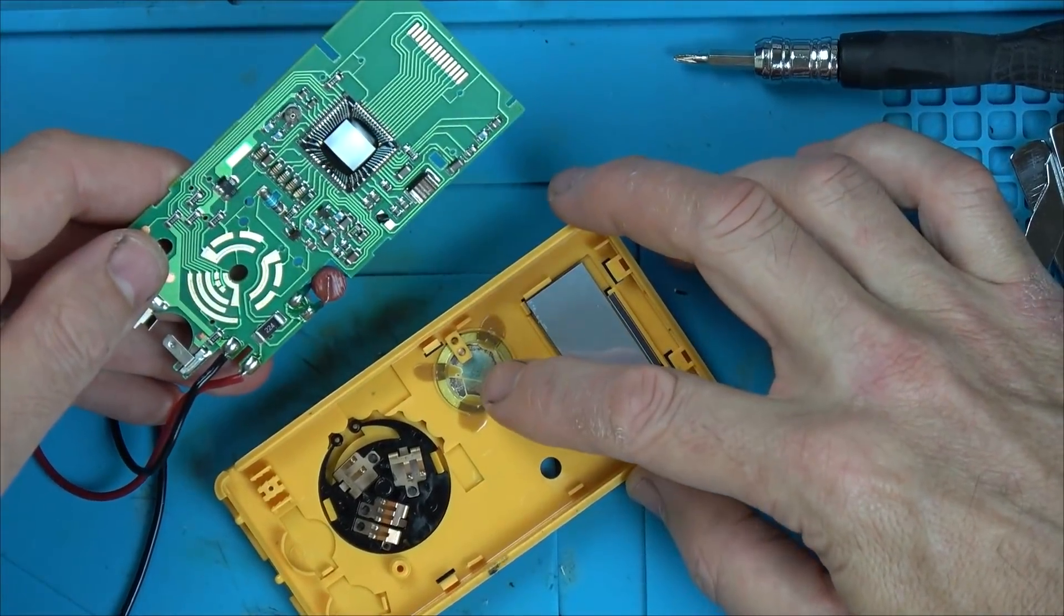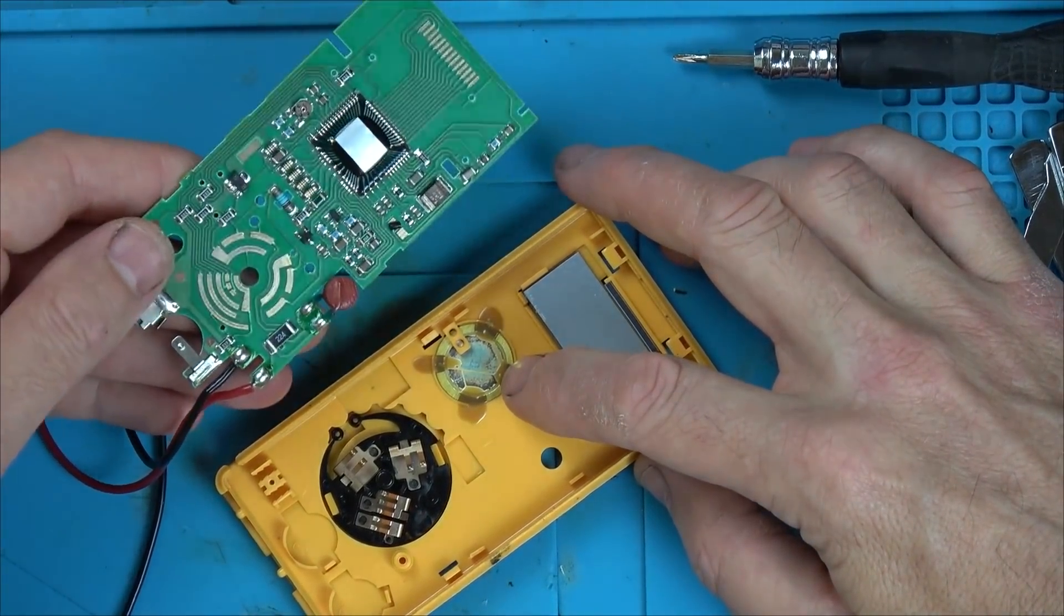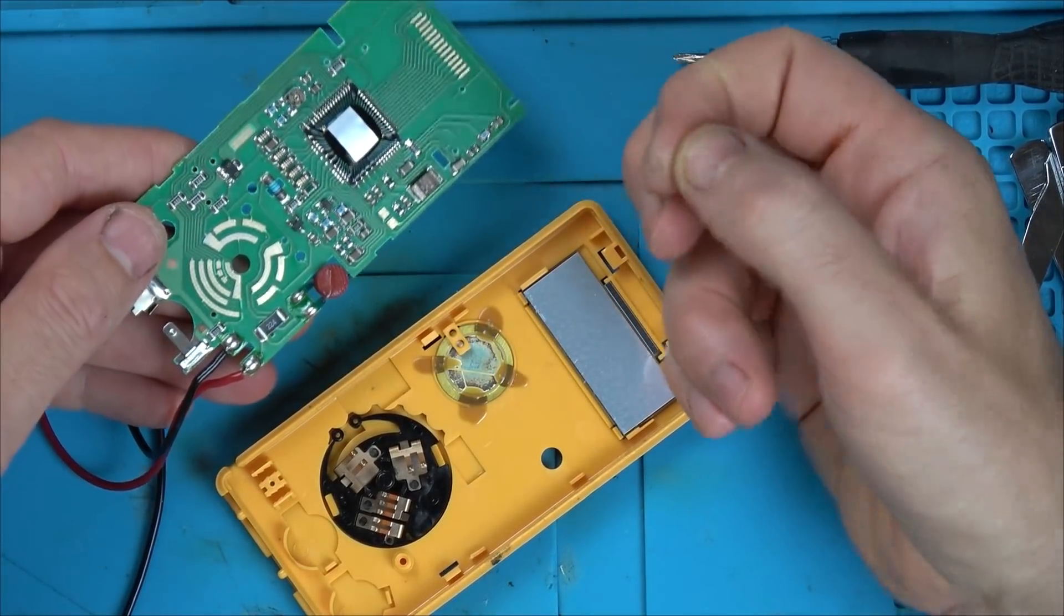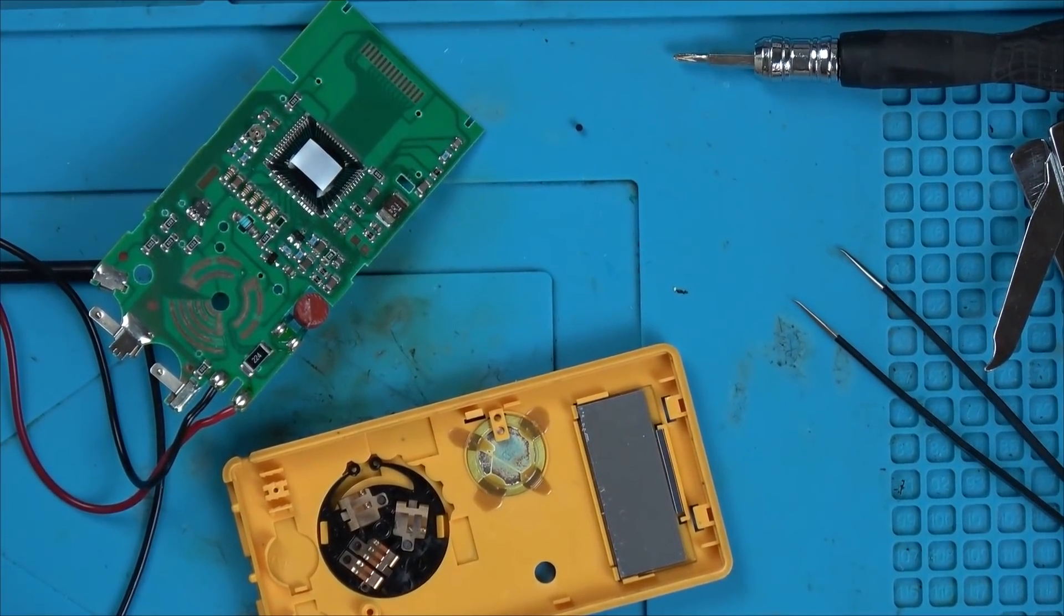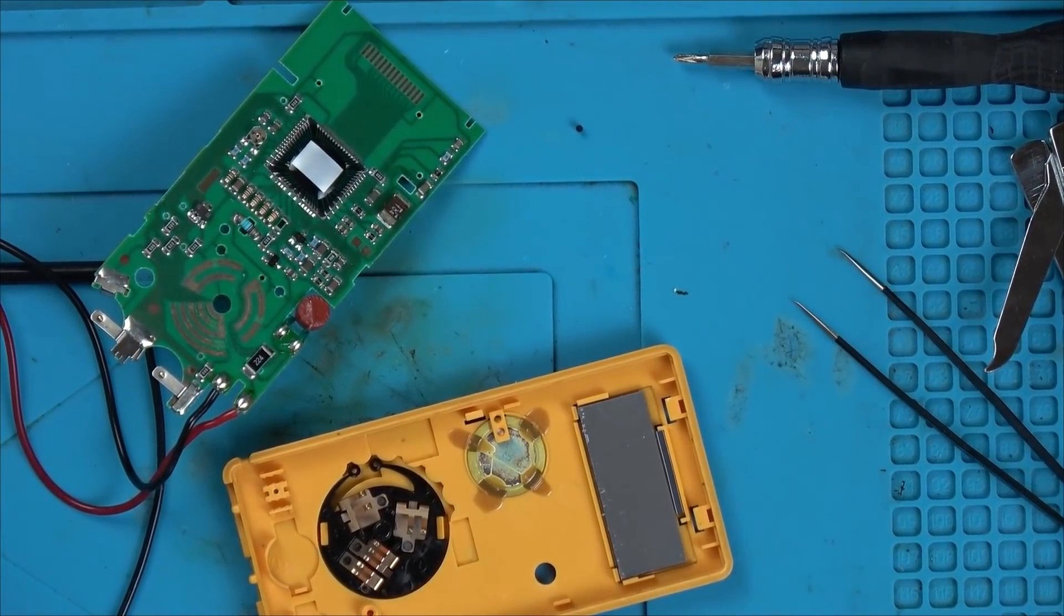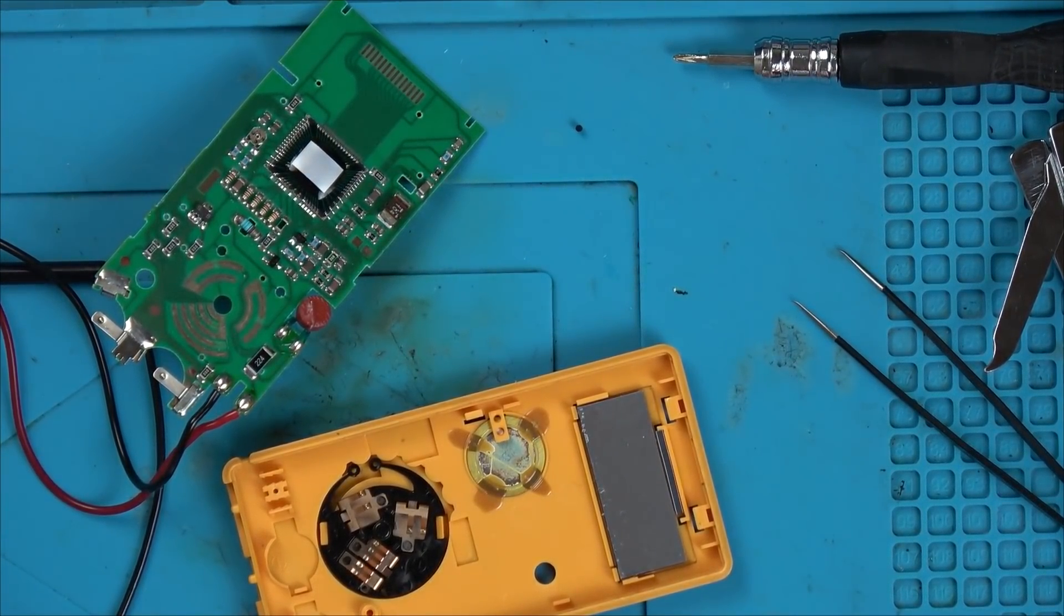So this is the buzzer here. Oh we've got a little black thing here. I saw a black thing a minute ago, what did I do with it? I think I threw it, I thought it was rubbish. Oh no it's on the floor here.